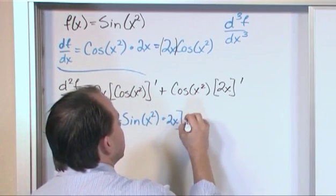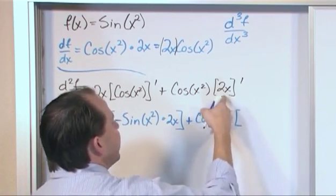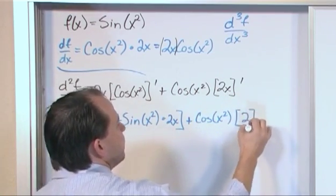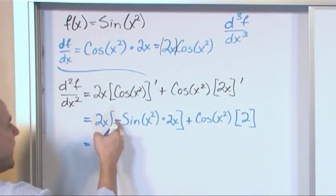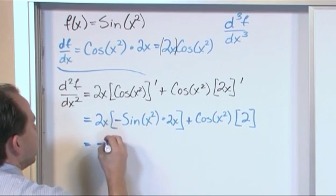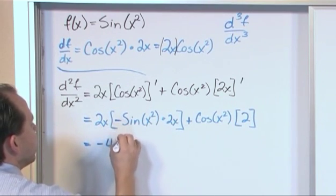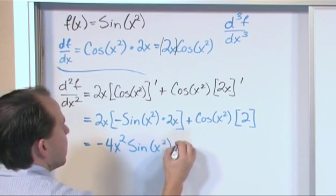What about over here? Plus cosine x squared. What is the derivative of 2x? It's just simply two. So that one's much easier. So let's go ahead and rewrite everything here. So we have a negative sine, negative, 2 times 2 is 4, x times x is x squared, so we have 4x squared sine x squared plus,